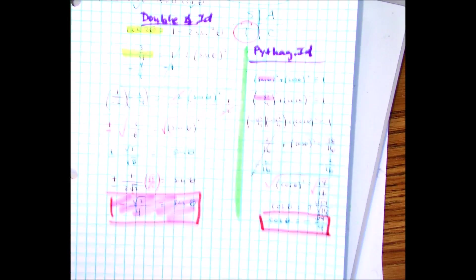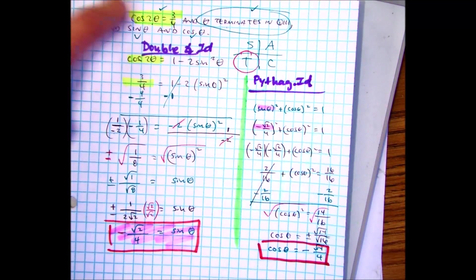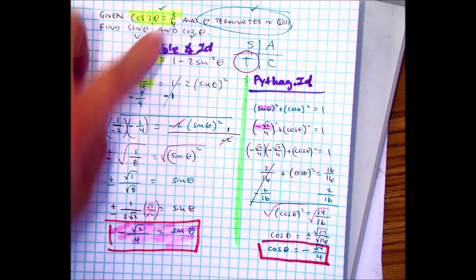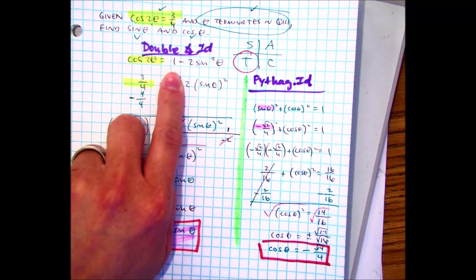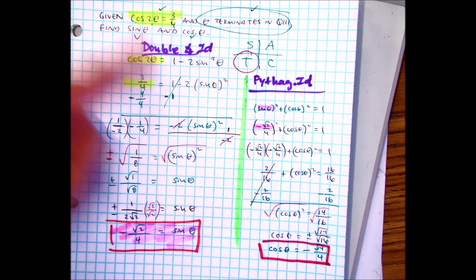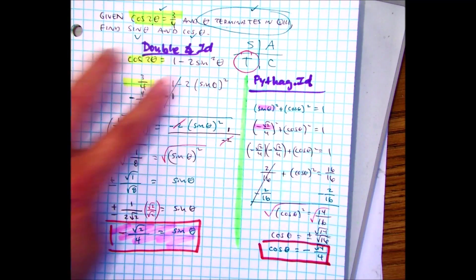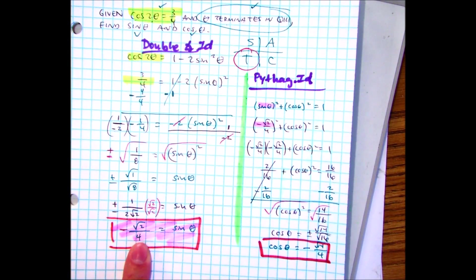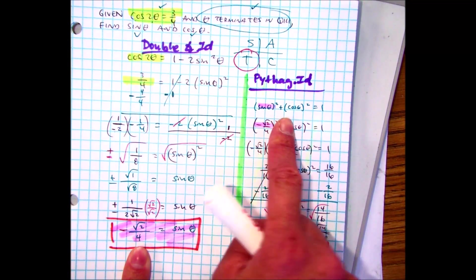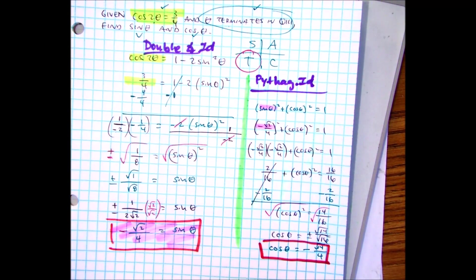So let's review. This problem, they gave us a double angle identity of cosine. Use that. Of the three, you could have chose either this one or 2 times cosine squared theta minus 1. Substitute in the information we have, which is the 3 fourths. And this is all algebra. Take this answer. You can use the Pythagorean identity and get cosine. We found both sine and cosine with our given information.